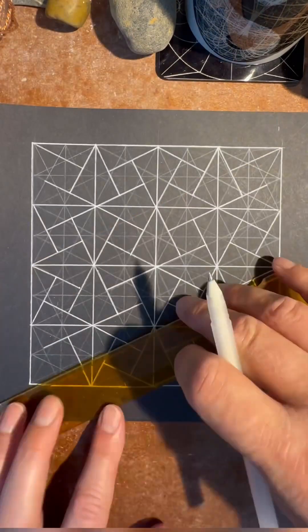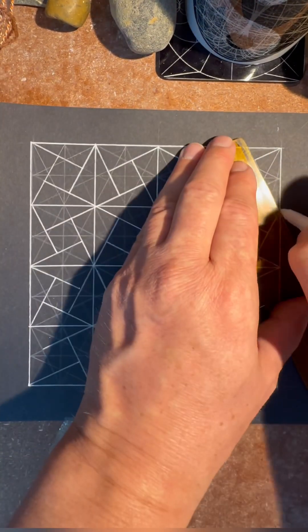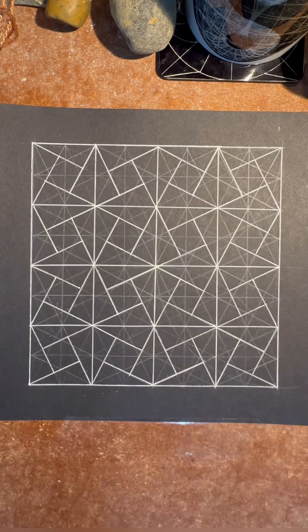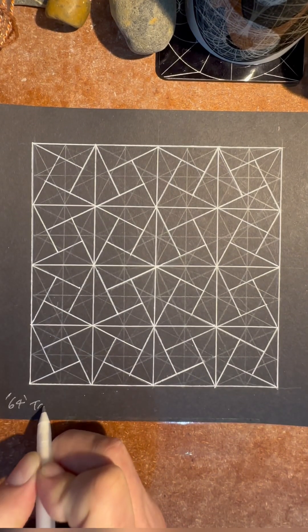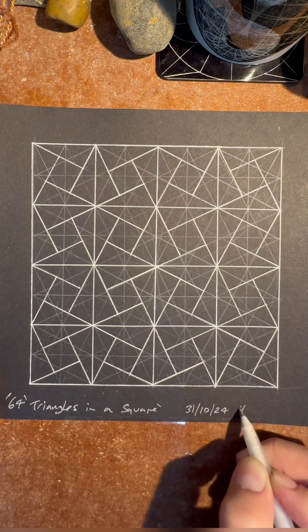Add in the last few triangles, and you will then have 64 triangles inside a cube. Thanks for watching, and I hope you've enjoyed drawing one of these with me.